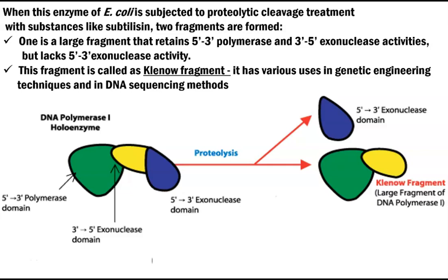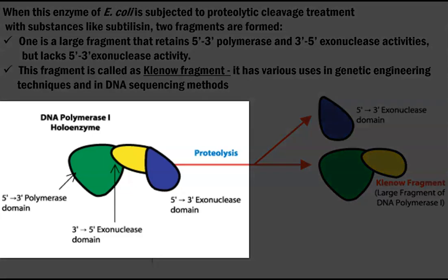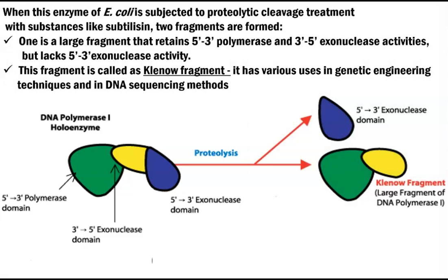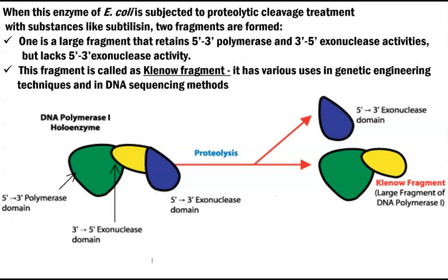When DNA polymerase 1 is subjected to proteolytic cleavage using subtilisin — an antibiotic from Bacillus subtilis — it forms two fragments. The DNA polymerase holoenzyme possesses 5'-to-3' polymerase, 3'-to-5' exonuclease, and 5'-to-3' exonuclease activity. Upon cleavage, the large fragment — called the Klenow fragment — retains 5'-to-3' polymerase and 3'-to-5' exonuclease activity. This fragment has important applications in genetic engineering, especially in DNA sequencing methods and next-generation sequencing to amplify single-stranded DNA molecules.